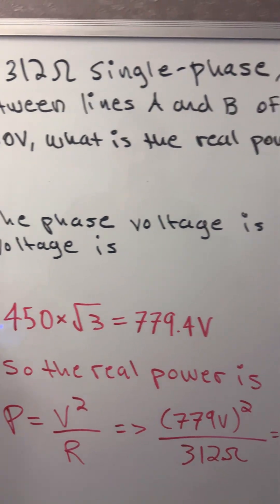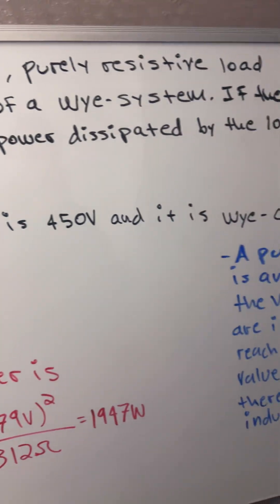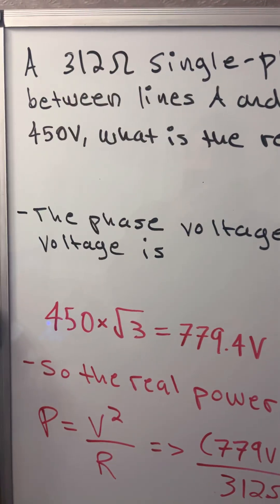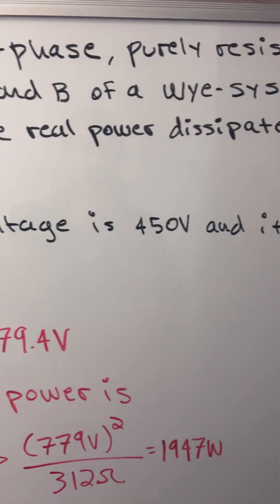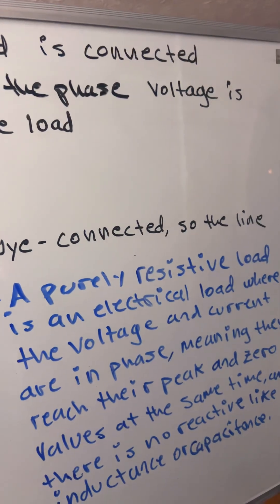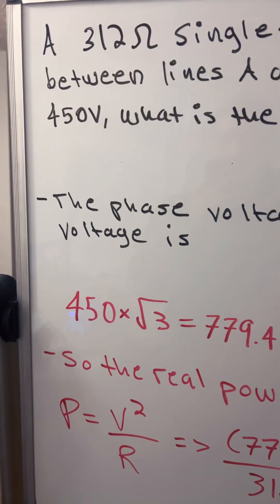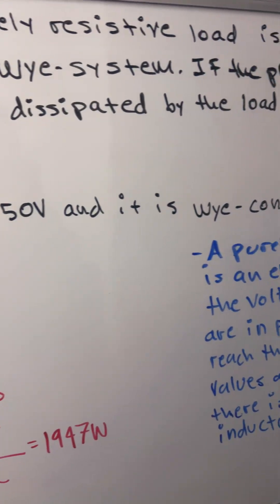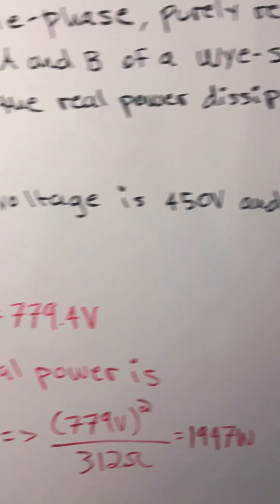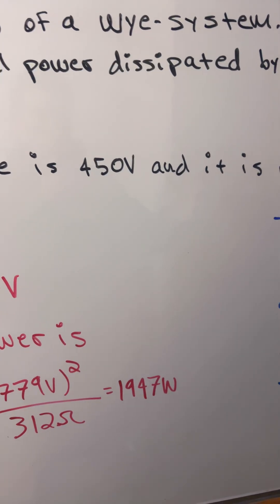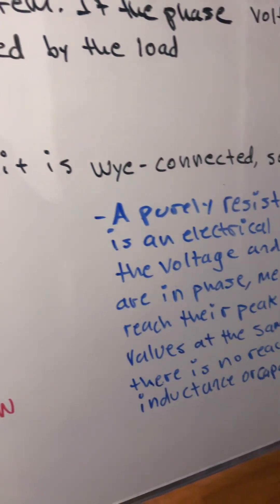A 312Ω single phase purely resistive load is connected between lines A and B of a Y system. If the phase voltage is 450 volts, what is the real power dissipated by the load? So we have the phase voltage is 450 volts and it is Y connected.